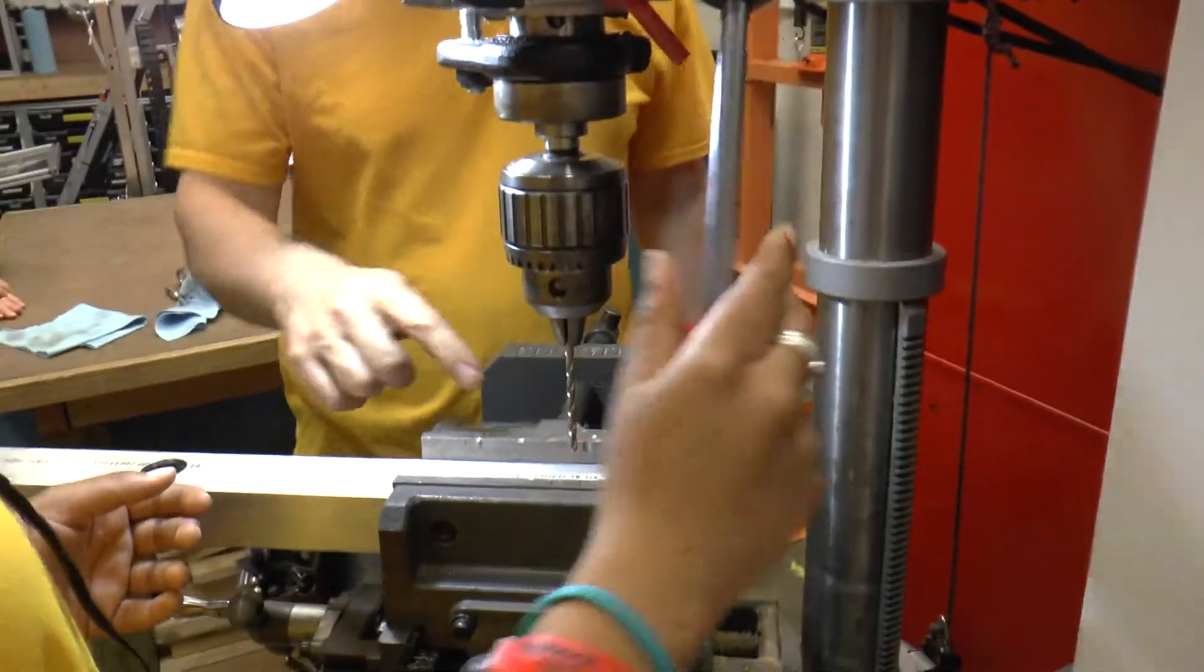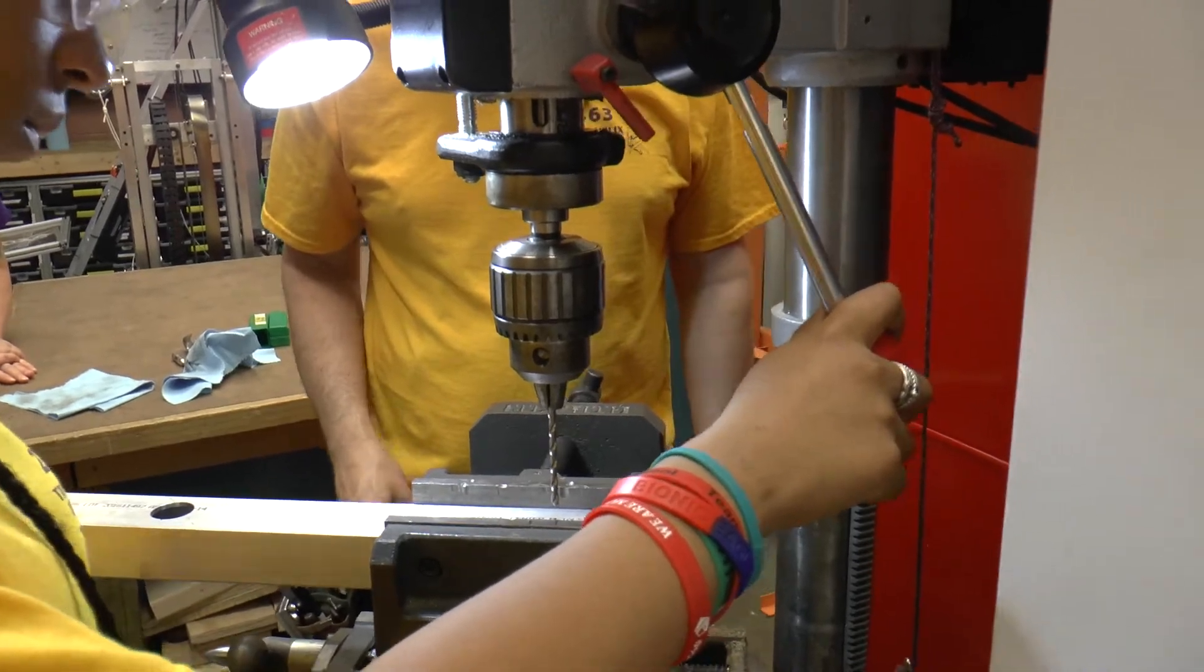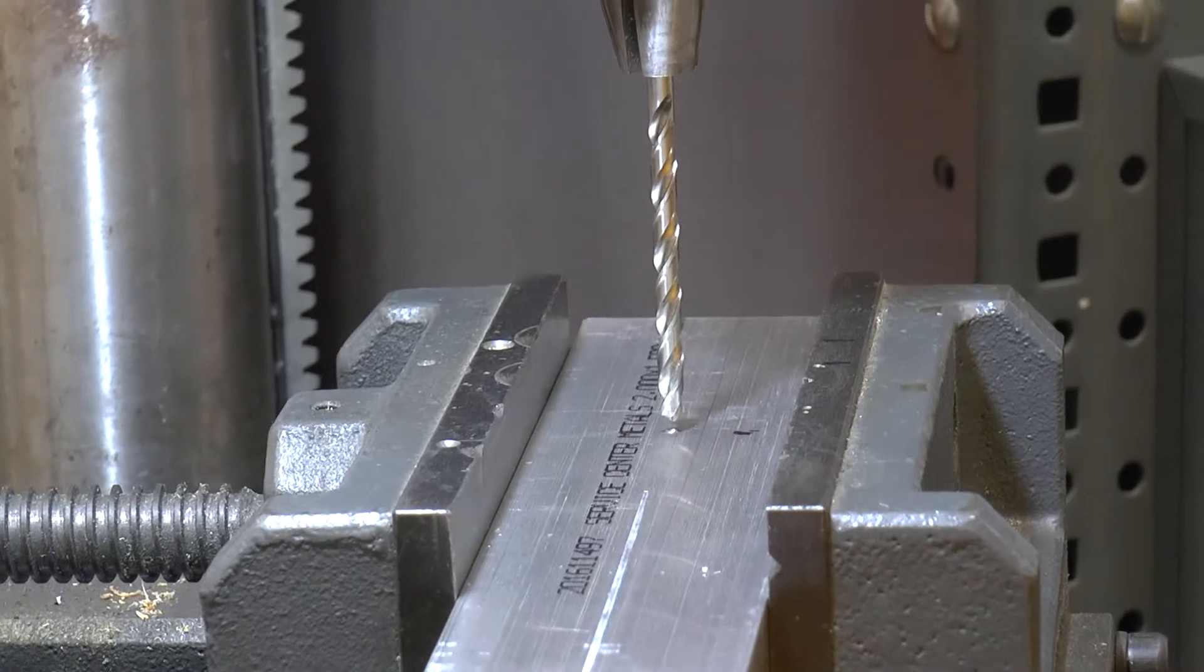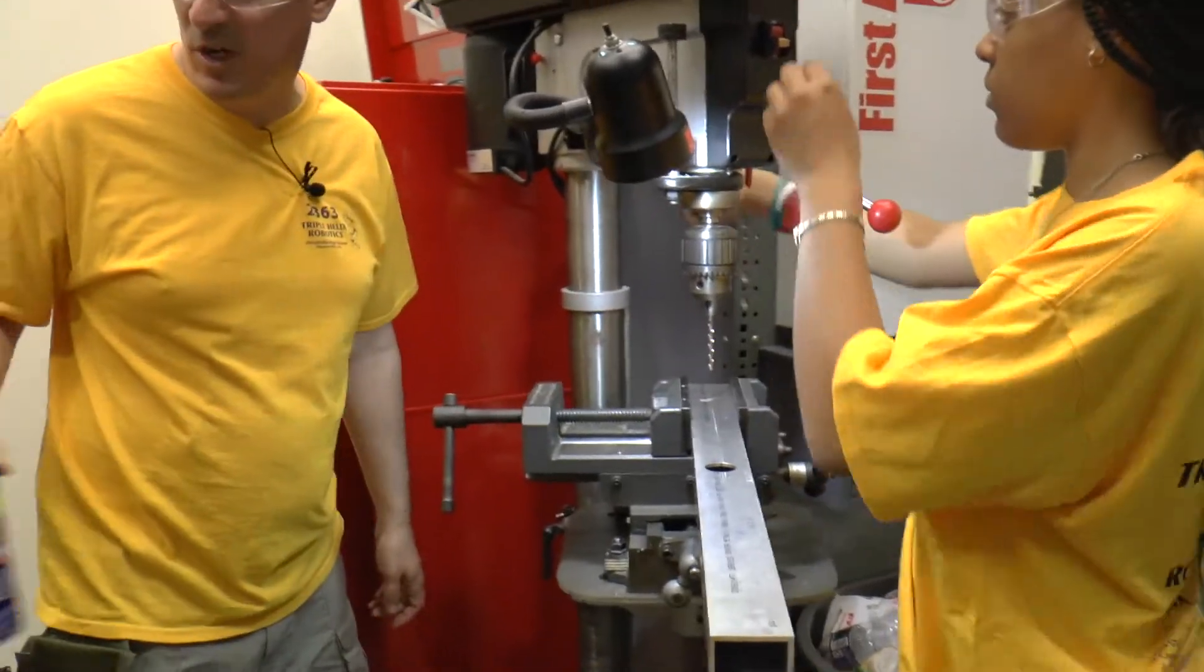Then use your cranks to get that dimple right under your drill bit. I think you got it. Let me grab the WD-40 like last time. Whenever I'm working on aluminum I always like to just use a little WD-40 for lubrication.